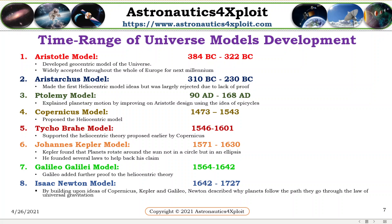Galileo Galileo model: Galileo added further proof to the heliocentric theory. Isaac Newton model: By building upon the ideas of Copernicus, Kepler, and Galileo, Newton described why planets follow the path they go through, through the law of universal gravitation.